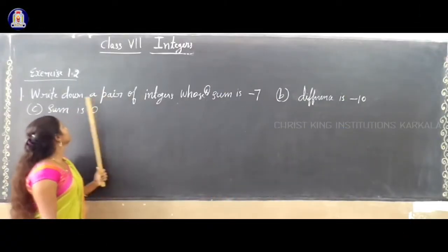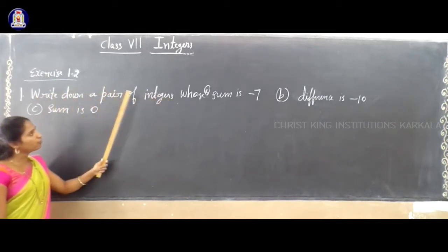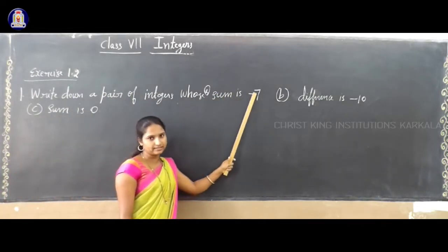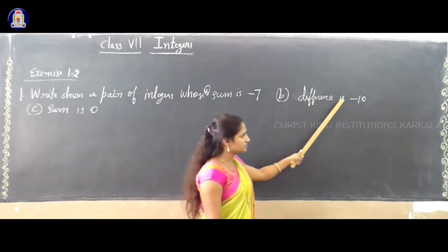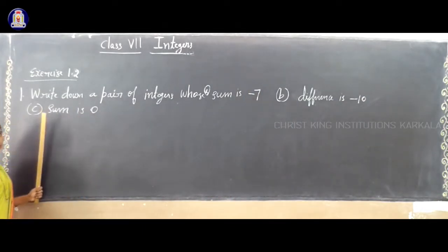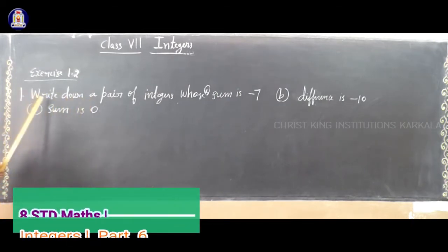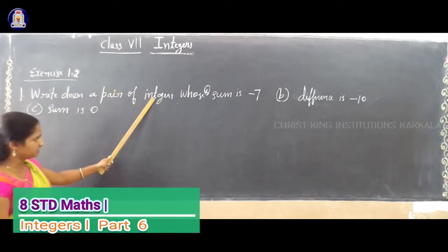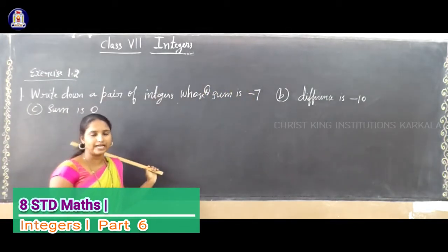Next question: write a pair of integers. First, the sum is minus 7. Second, the difference is minus 10. Third, the sum is 0. You have to write a pair of integers whose sum is minus 7. You can consider any two integers.